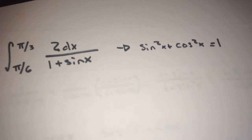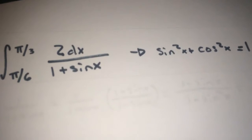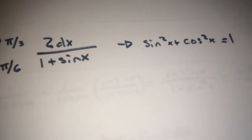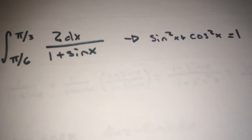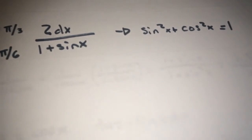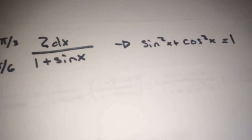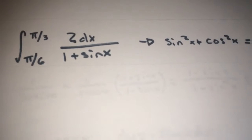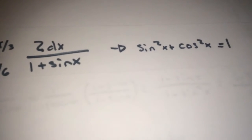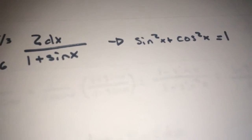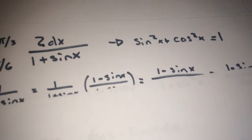Here's one last example — a definite integral from pi over 6 to pi over 3. Unlike the others, this one uses limits of integration so we'll get a numerical answer. The integrand is 2 dx over (1 plus sine x), and I'm going to use the identity sine squared x plus cosine squared x equals 1.